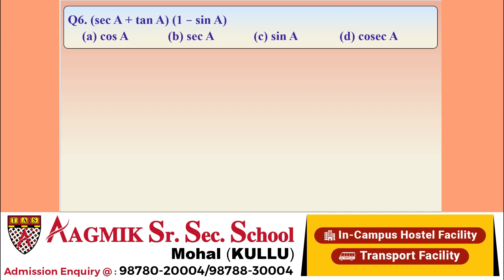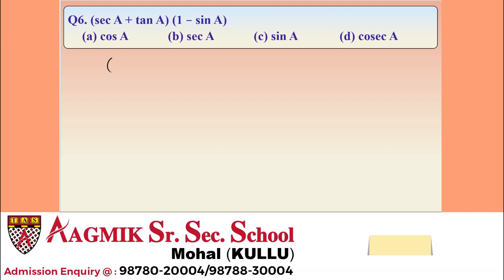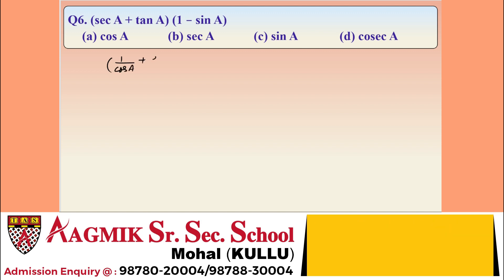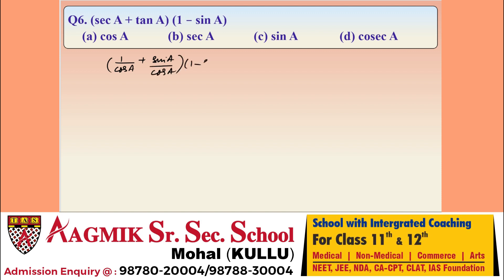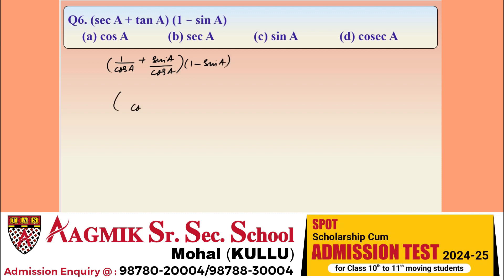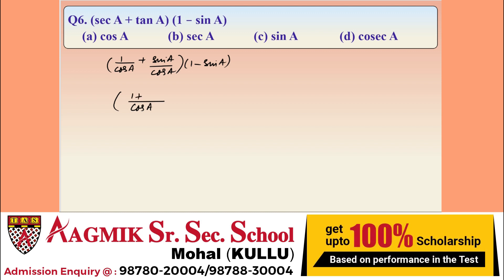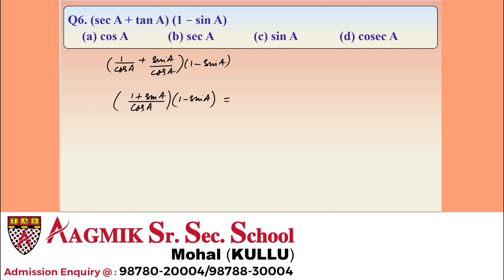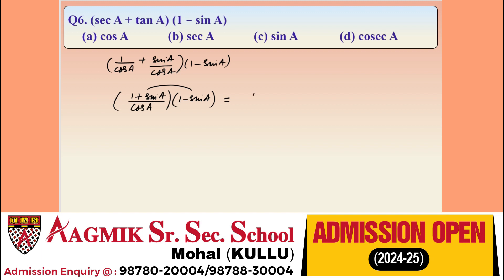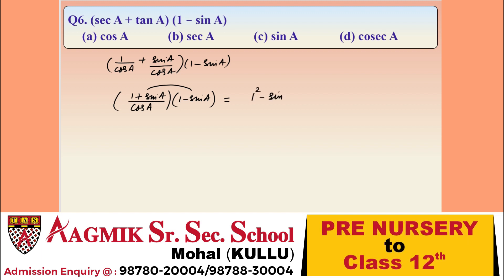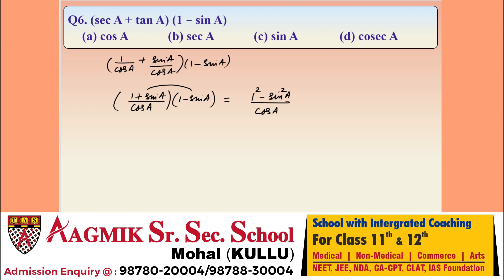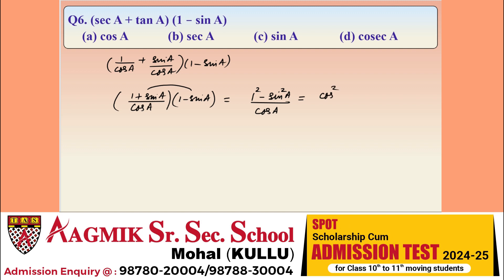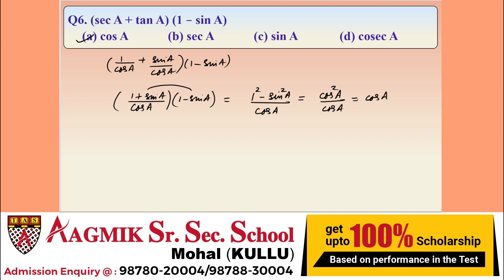Question 6: find (sec A + tan A)(1 - sin A). sec A = 1/cos A and tan A = sin A/cos A. Taking cos A as LCM in the first factor: (1 + sin A)/cos A multiplied by (1 - sin A). Numerator: (1 + sin A)(1 - sin A) = 1 - sin²A = cos²A. So we get cos²A / cos A = cos A. Option A is correct.